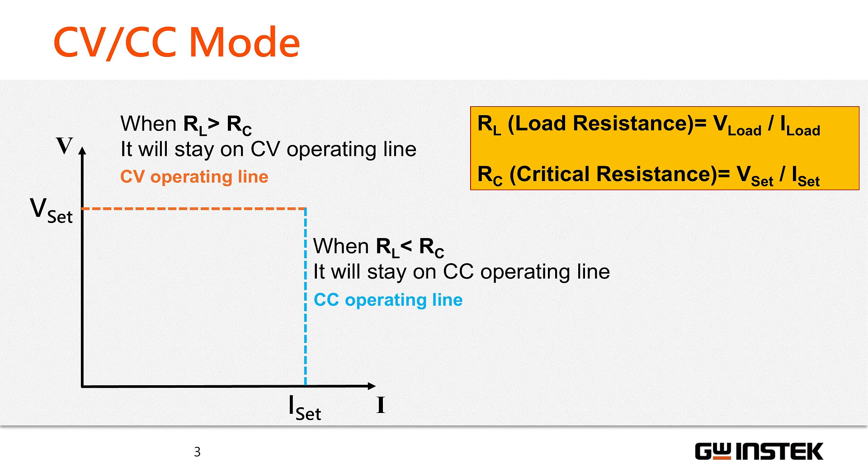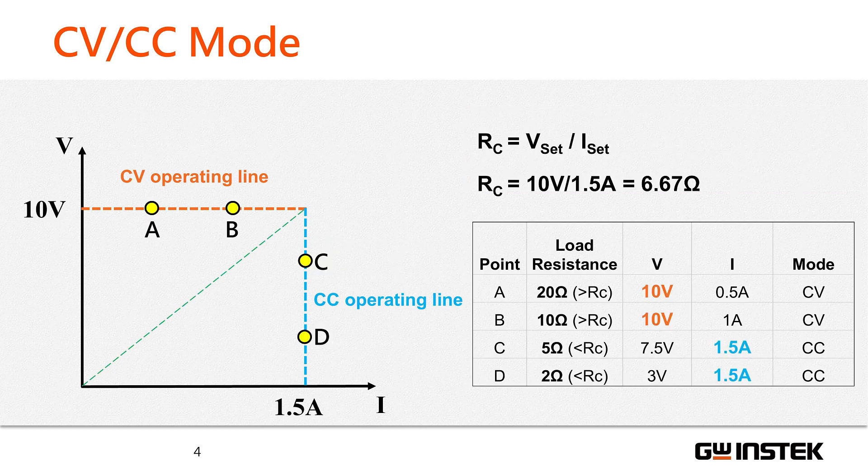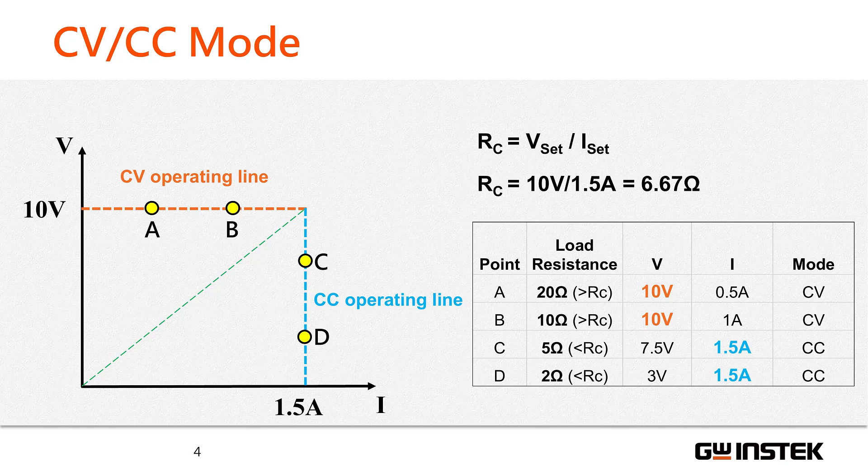In this case, it operates in CV mode with zero current. Now let's provide some examples. First, let's consider the power supply settings. We set the voltage to 10 volts and the current to 1.5 amperes.